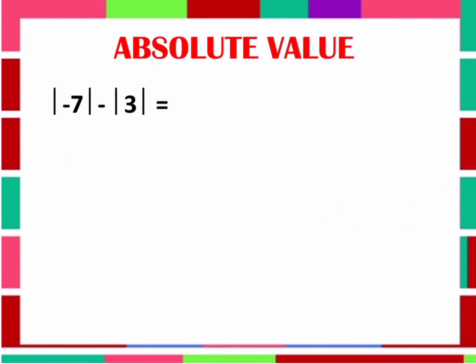Let's proceed to Operations of Absolute Value. In this example, before doing the operation, get the Absolute Value first of negative 7 and 3. The Absolute Value of negative 7 is 7, and the Absolute Value of 3 is 3. So it becomes 7 minus 3, which is equal to 4.